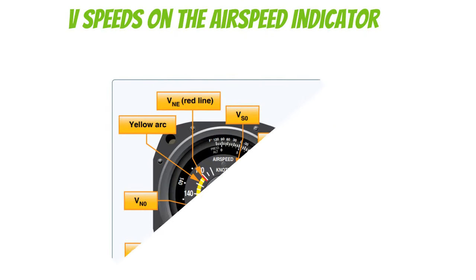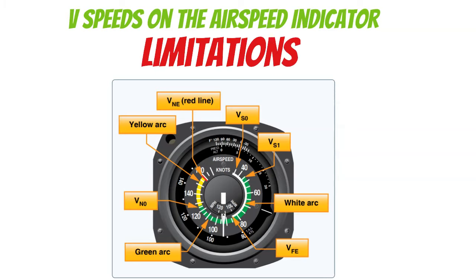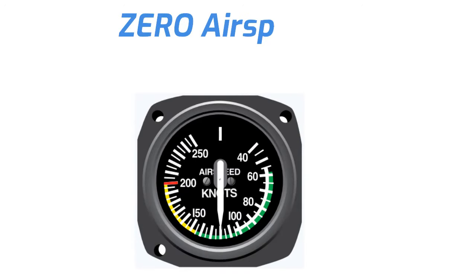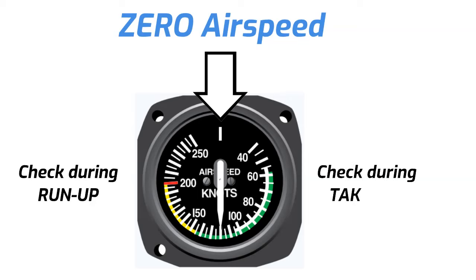Let's take a look at our V-speeds on the airspeed indicator. You'll find that most of your speed limitations are actually color-coded. First, I want to point out something that's not a V-speed: the zero airspeed marker. It should read zero when we're not moving. I usually check this during the run-up, then on the takeoff roll I check it again to make sure it's moving away from zero — that's how we verify it works properly.